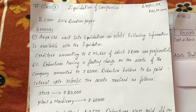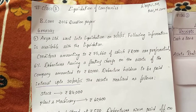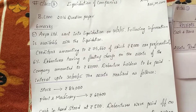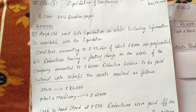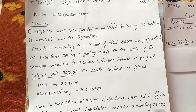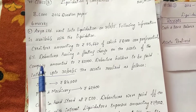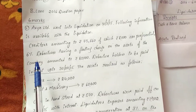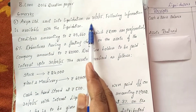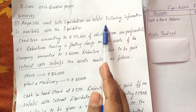Hi friends, today I am going to explain the 2016 question paper 6 marks and 14 marks. The first 6 marks question: Aria Limited went into liquidation on 31st March 2015.